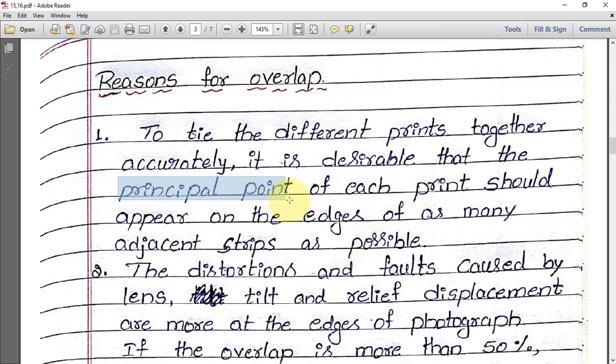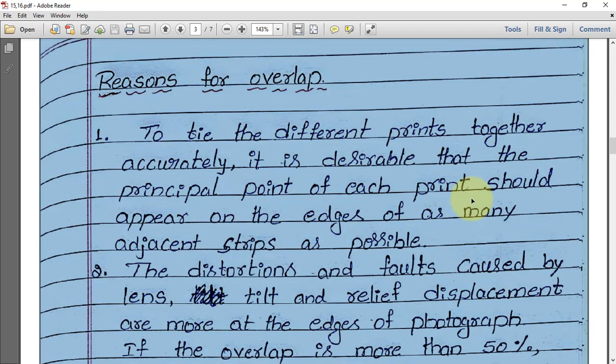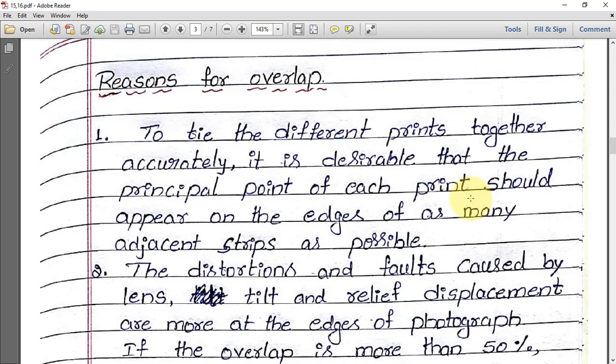The principal point means the middle point of the photograph. If one photograph has a principal point, that principal point should be visible in the other prints—in the previous photograph and in the next photograph as well.